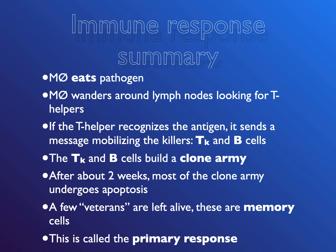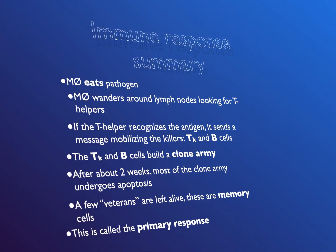After about two weeks, most of the clone army is built up, gone out, and killed the pathogen with tanks and antibodies. Most of the clone army then undergoes apoptosis, which means programmed cell death. A few of these veterans are left alive, and these are called memory cells. That is called the primary response.